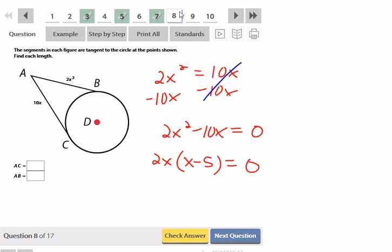So 2X can be zero, which would mean that X would be zero. Or X minus 5 could be zero, which when you add 5, X could be 5. If X was zero, that would be a problem because then I would get that the distance for AC and AB would both be zero. Because 10 times zero is zero, and 2 times zero is zero.